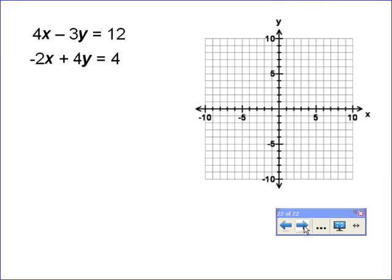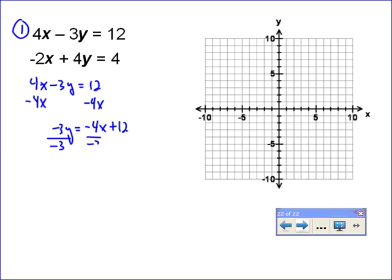Another example of this, just graph both these lines. So I take the first one, I'm going to do 4x minus 3y equals 12. Subtract 4x, I get negative 3y equals negative 4x plus 12. Divide through by negative 3 and I get y equals positive 4 thirds x minus 4. So my slope is positive 4 thirds, my y-intercept is 0 negative 4.